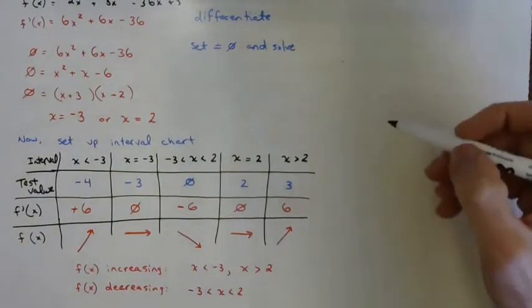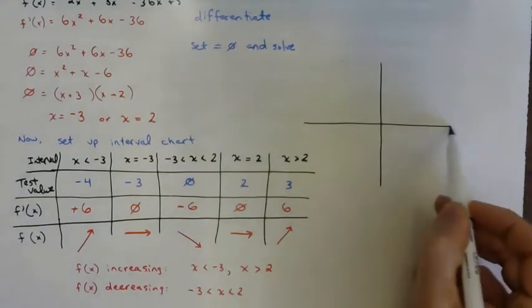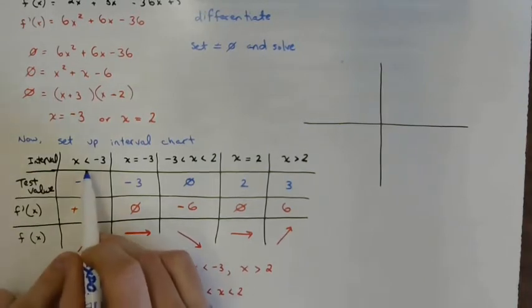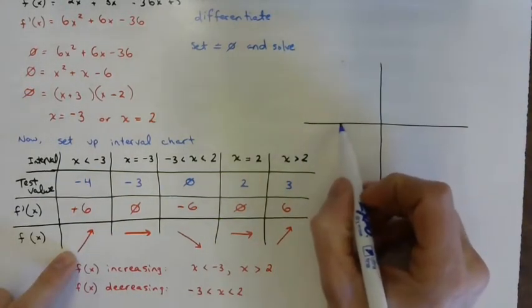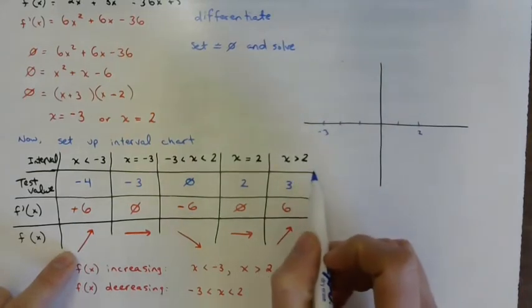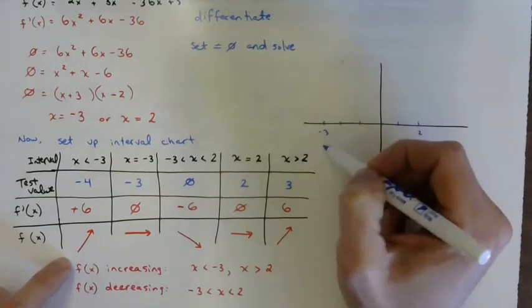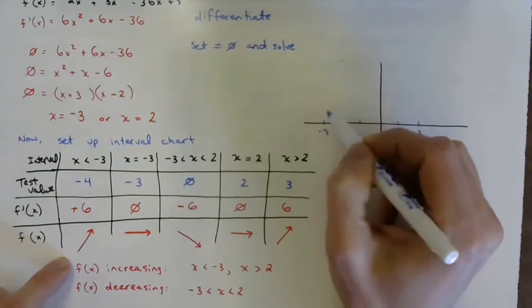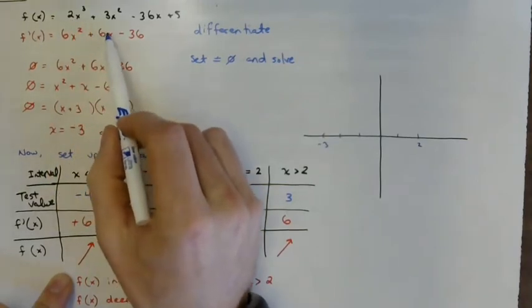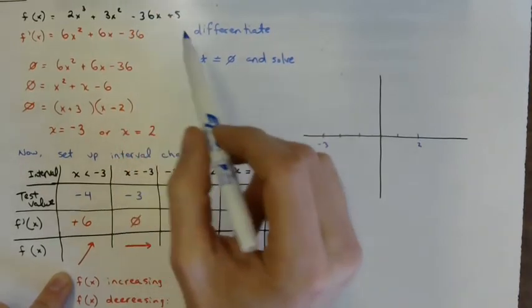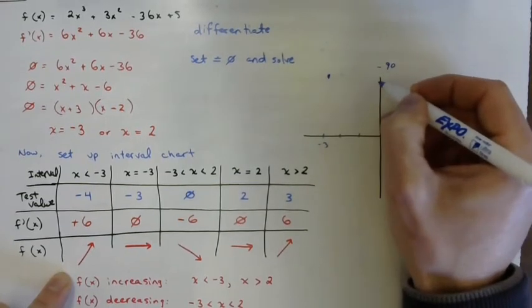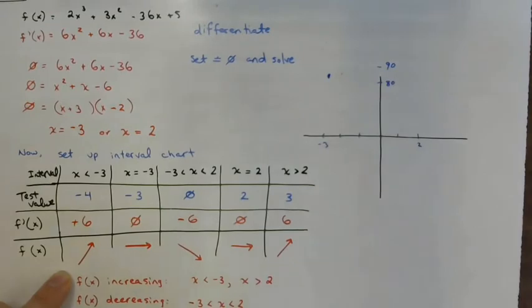We're going to sketch f of x based on the information from the derivative. The derivative has a zero at negative three and at positive two. f of x is increasing up to negative three, so we have a maximum somewhere along x equals negative three. Subbing x equals negative three into the original gives a value around 83 or 84, so there's a max way up there.